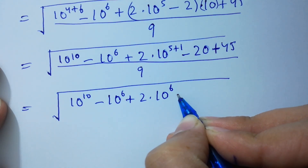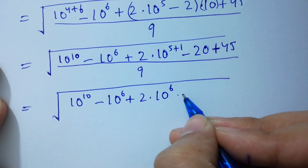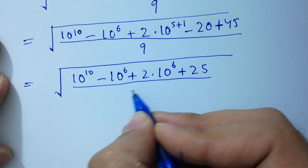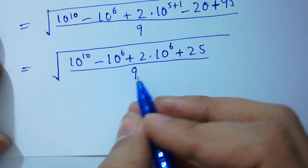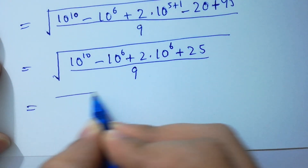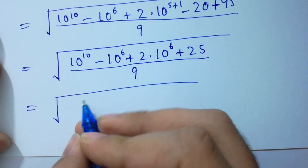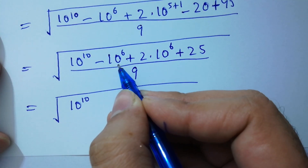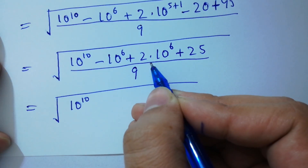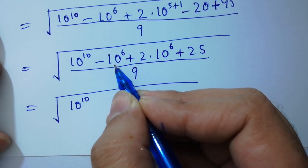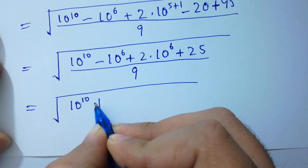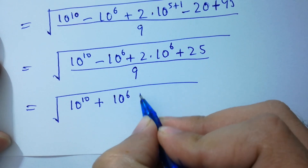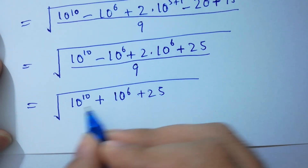Minus 20 plus 45 will be here plus 25, over 9. Next: 10 to the power 10 as it is, and minus 10 to the power 6, plus 2 times 10 to the power 6 — 2 minus 1, we get 1 — so we can write here plus 10 to the power 6, plus 25 as it is, over 9.